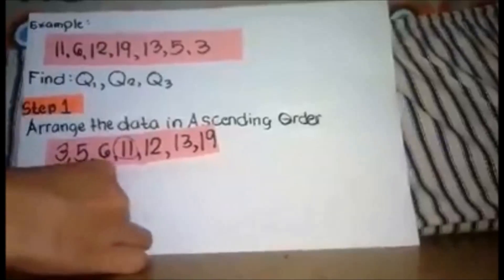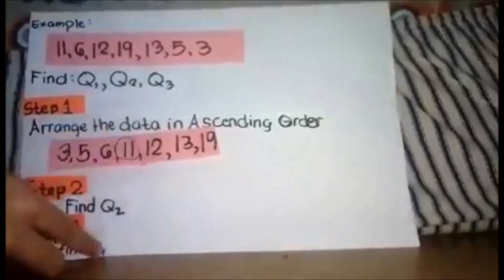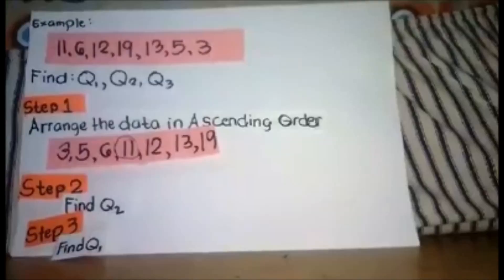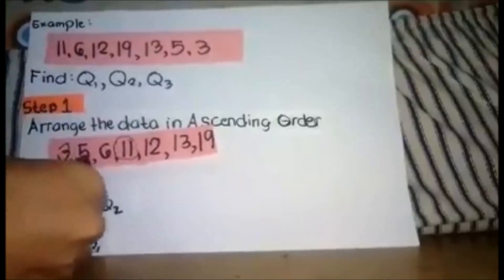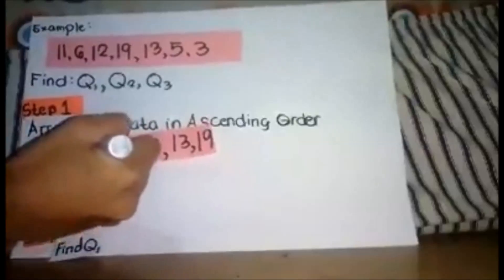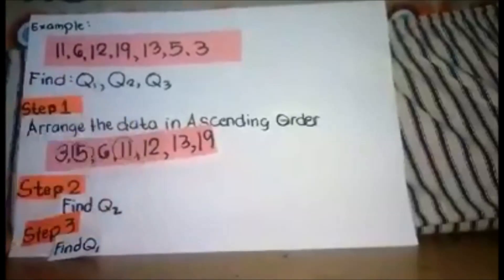Step 3, find Q1. Q1 is found on the left side of the median. So counting: 1, 2, 1, 2. So 5 is our Q1.